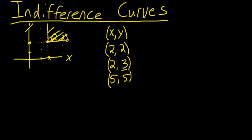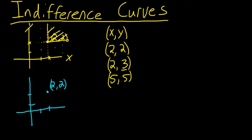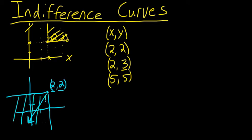Now we ask: where would bundles be on this graph that were definitely worse than our starting point of 2, 2? If more is always better, then that is equivalent to saying that less is always worse. So if I take all the bundles that fit into this corner — the bundles in the southwest quadrant from the point 2, 2 — these bundles all have less X or less Y than the bundle we're starting with. Which means everything in this quadrant is going to be worse than 2, 2. These bundles will all be less preferred than 2, 2.